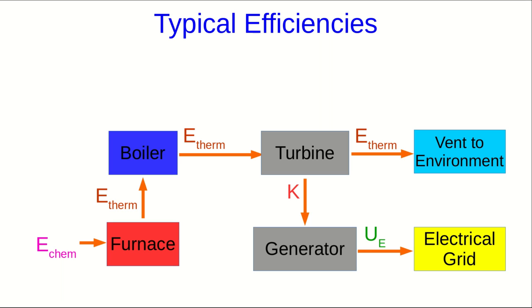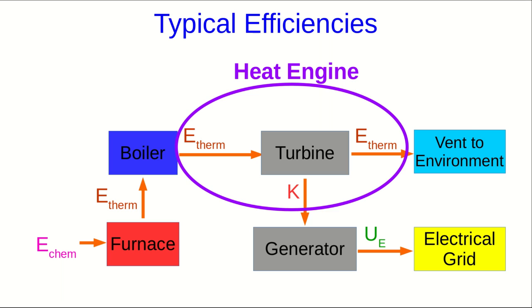Let's finish up by talking about typical efficiencies of power plants that produce power by burning fossil fuels. All of them roughly follow a flowchart we've seen in an earlier video. The exception is that some natural gas plants do something more complicated, which I'll discuss in a bit. In the middle we have the turbine, which takes in thermal energy from the boiler and converts some of it to mechanical energy — meaning the turbine is a heat engine, operating between a hot reservoir (the boiler) and a cold reservoir (the environment).